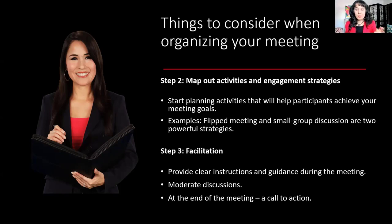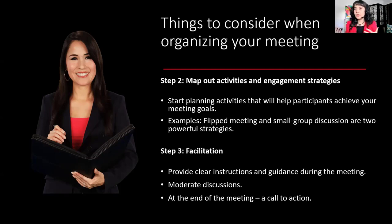The third step is facilitation. I feel I could do a whole separate webinar on how to facilitate inclusive meetings, but one thing I wanted to mention is that at the end of the meeting, it is important to have a clear call to action — connected to the goal of your meeting and why you asked everyone to come. Examples could be discussing roles and responsibilities, assigning roles on a project, discussing a project deadline, or scheduling follow-up meetings to continue the discussion.